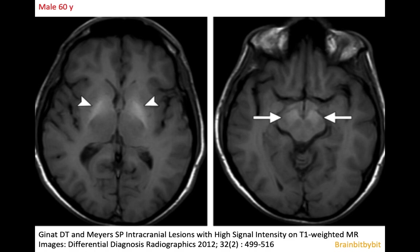If patients receive a liver transplant or if the liver failure is resolved in another way, the patient first improves clinically, and after a few months the MRI also normalizes, so this high T1 signal disappears.